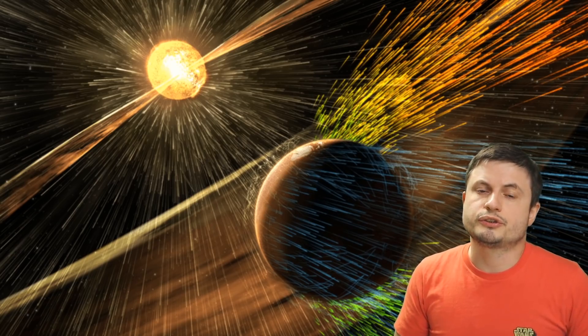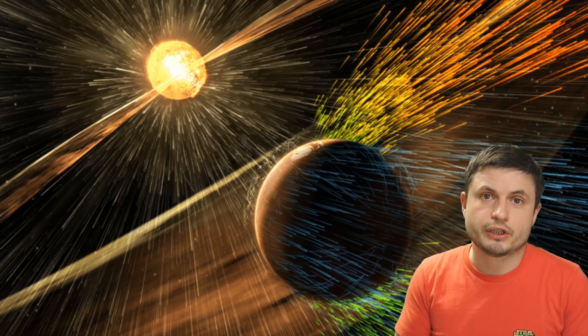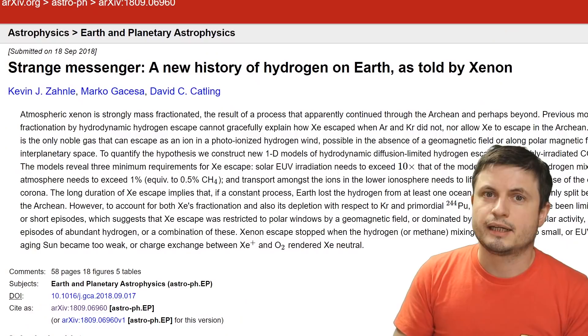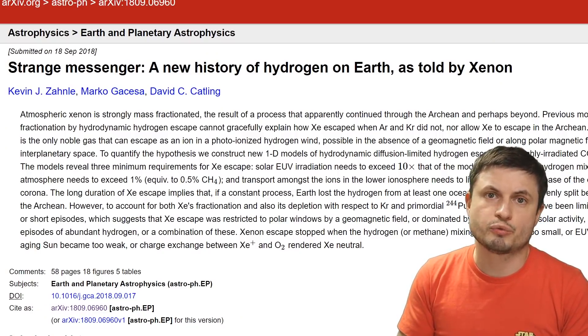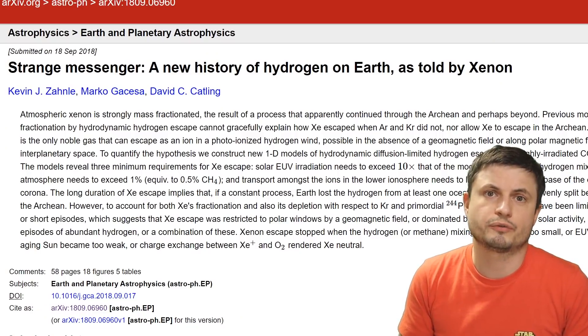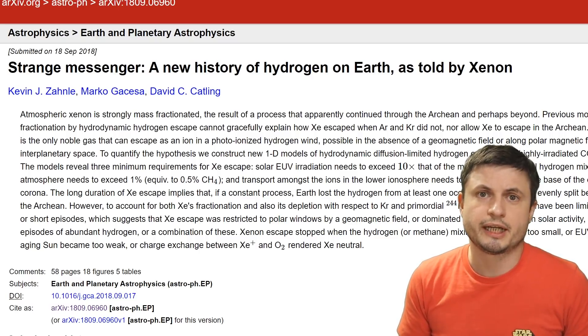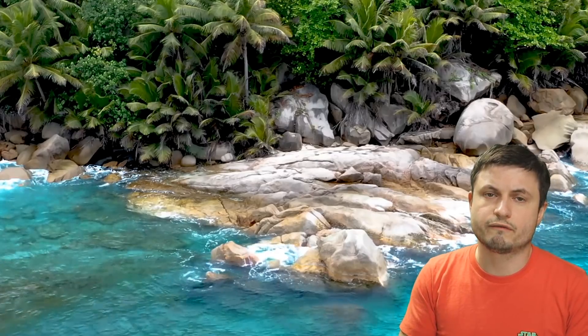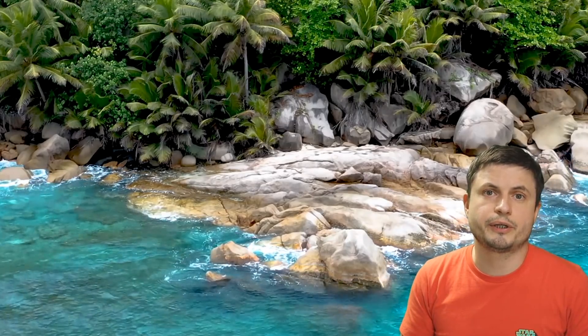But water has been continuously lost to space for billions of years. As a matter of fact, the sun's radiation breaks down water molecules into hydrogen and oxygen, and hydrogen then escapes into the depths of space. And so when trying to calculate how much water may have been lost by using isotopes of xenon, the scientists discovered that at least an entire ocean worth of water has been lost since the creation of the planet.